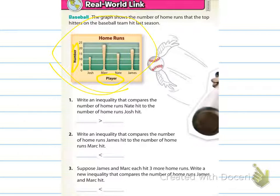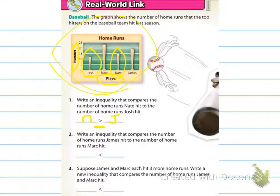It says write an inequality that compares the number of home runs Nate hit to the number Josh hit. They give us a greater than sign. Remember that the alligator wants to eat the bigger number — Nate is our bigger number and Josh is our smaller number. Nate is at 15 home runs, which is greater than Josh, who has about 12 home runs.